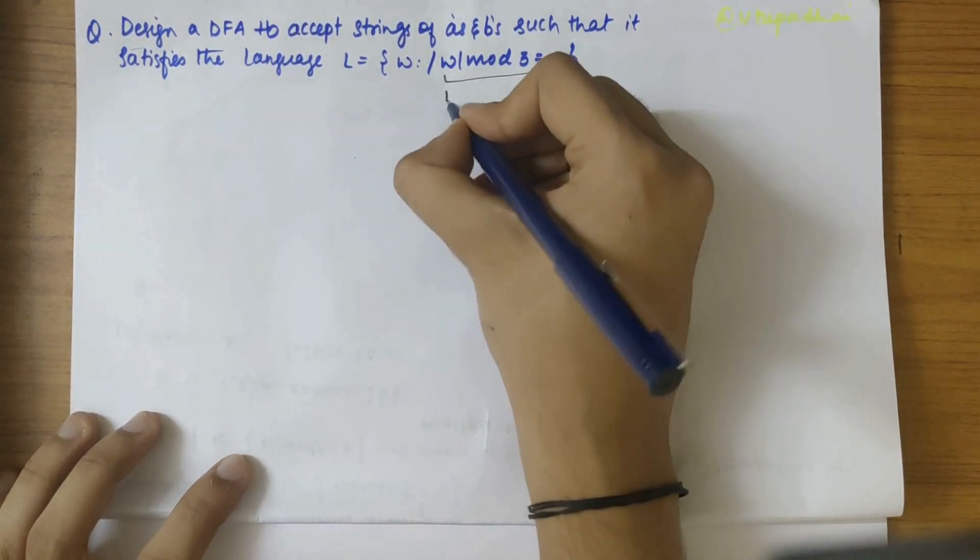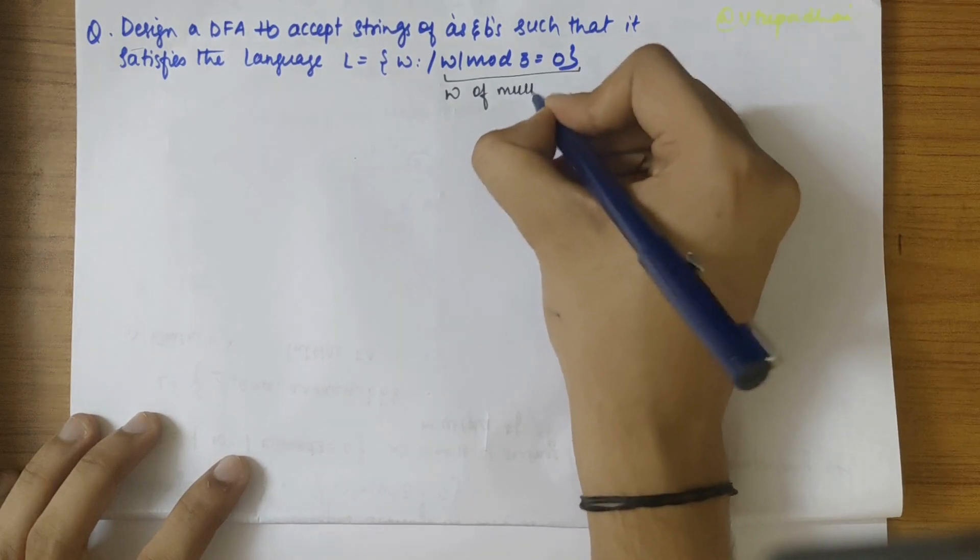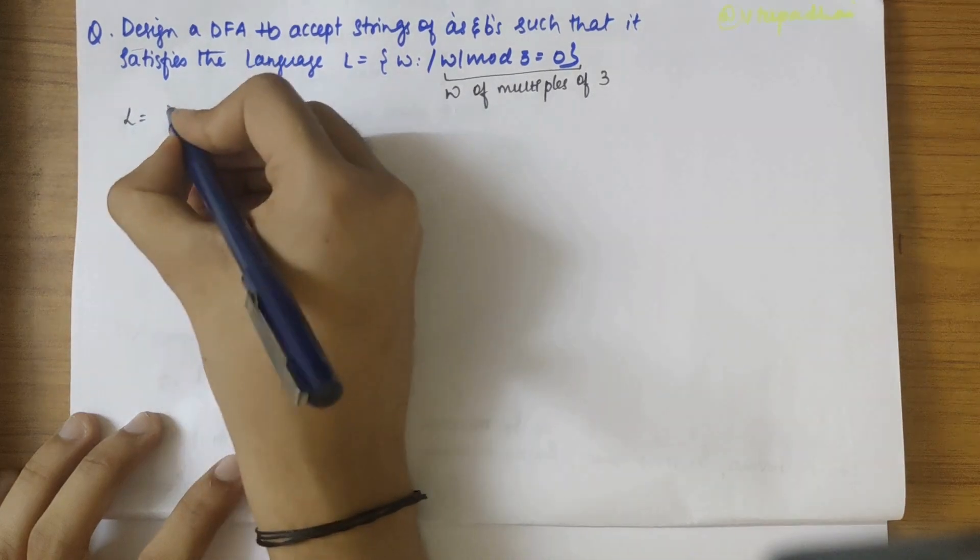W mod 3 equals 0 states that the words or the strings should be of multiples of 3. Okay, so let's write the language first.